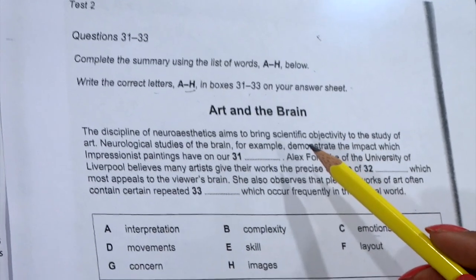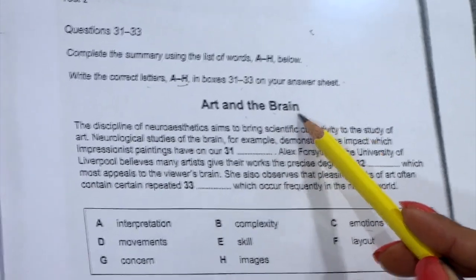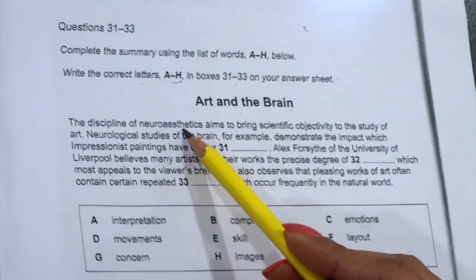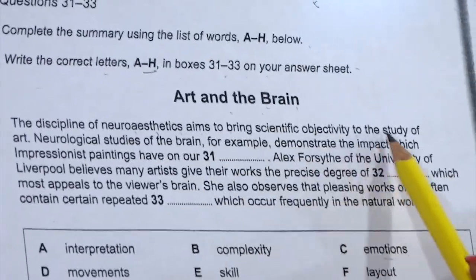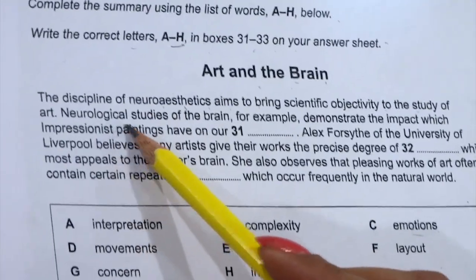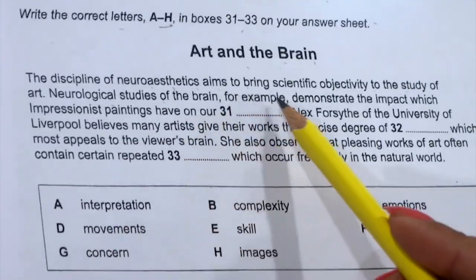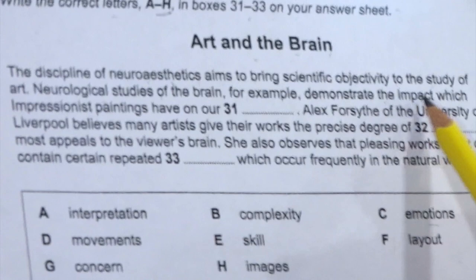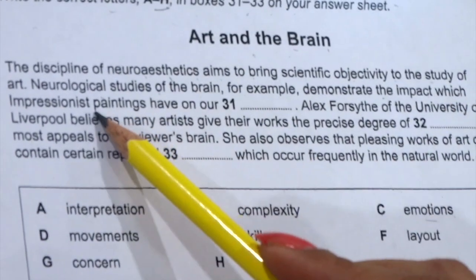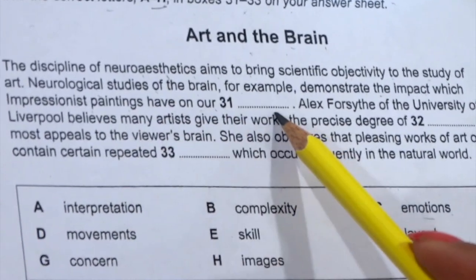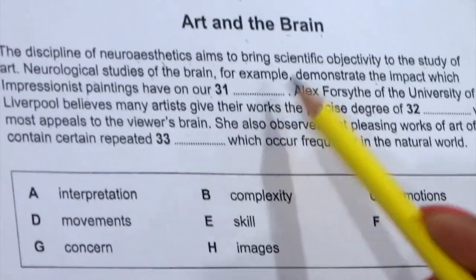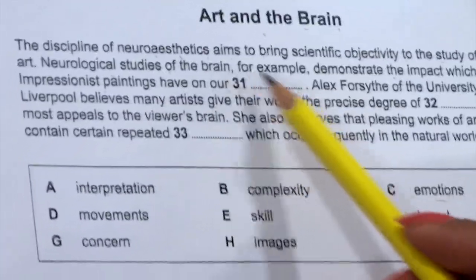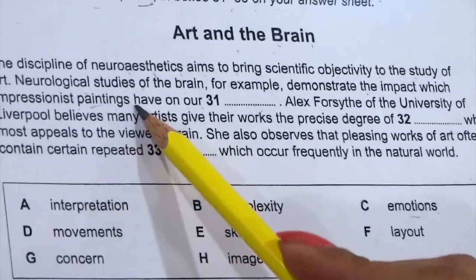Now we will read the questions. 'Art and the Brain': The discipline of neuroaesthetics aims to bring scientific objectivity to the study of art. Neurological studies of the brain, for example, demonstrate the impact which impressionist paintings have on art — [gap]. We will take the keywords: scientific objectivity, neuroaesthetics, neurological studies, and about paintings, and move to the passage.